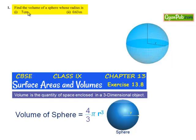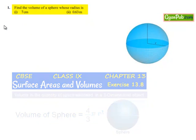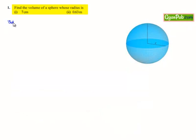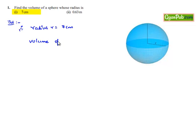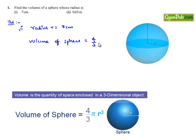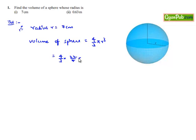Moving on to the first question: find the volume of a sphere whose radius is 7 centimeters. In the first part, the radius of the sphere is given as 7 centimeters and we are asked to find the volume. We know the volume of a sphere is 4/3 × π × r³, which equals 4/3 × 22/7.